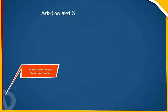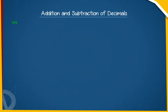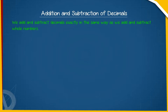Addition and subtraction of decimals. We add and subtract decimals exactly in the same way as we add and subtract whole numbers. For example, 1.234 plus 2.63 plus 59.3 can be added as shown here.